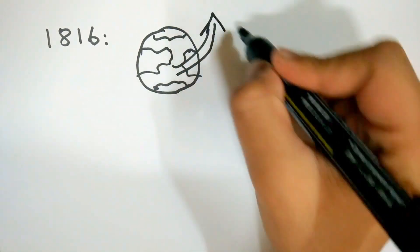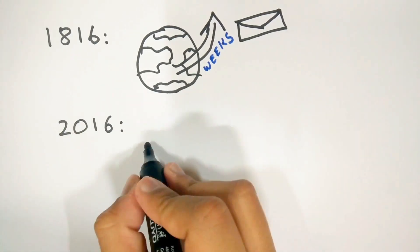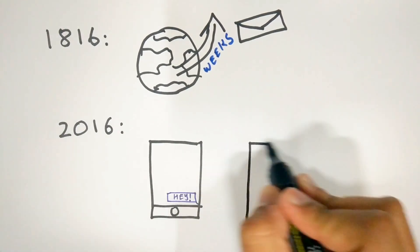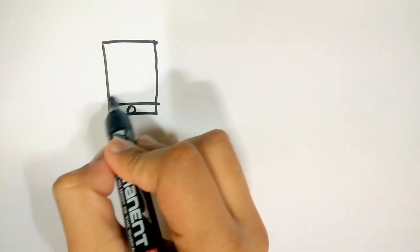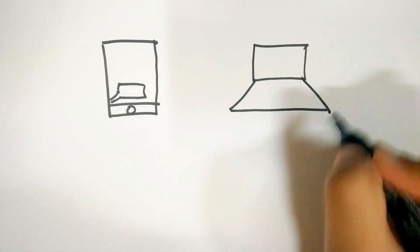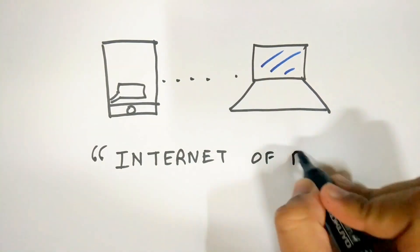200 years ago it took weeks to send a message to another person across the globe. Now it can be done in less than a second. Considering how almost everyone nowadays uses the internet to communicate with each other, today's internet can be rightfully called the internet of people.